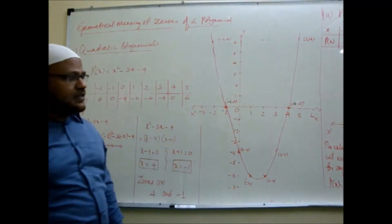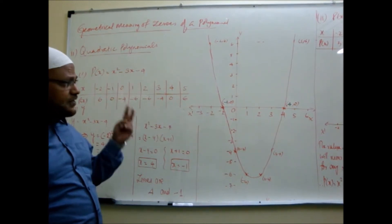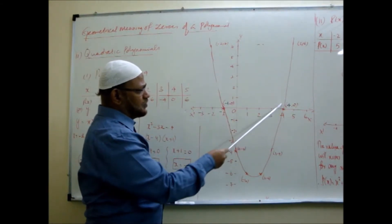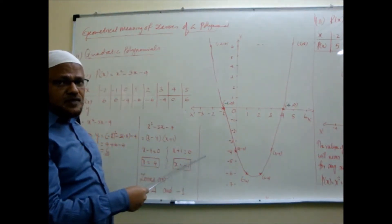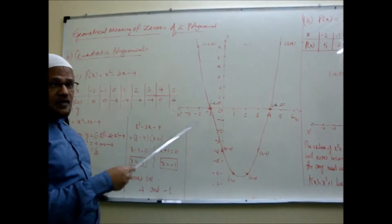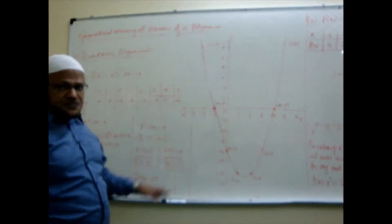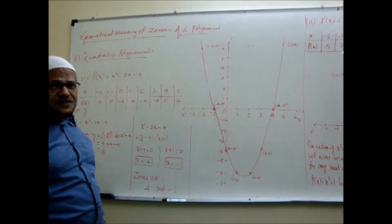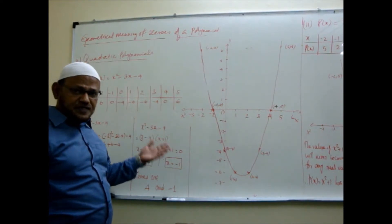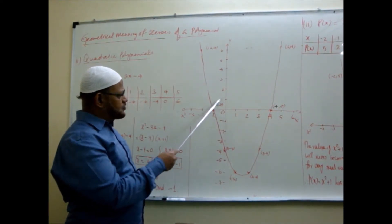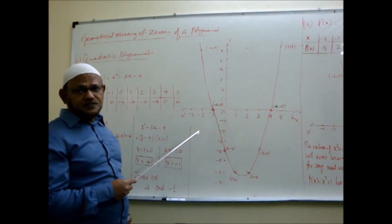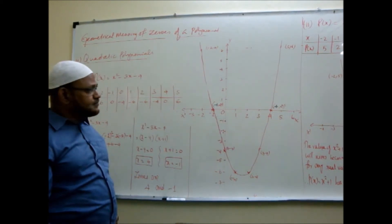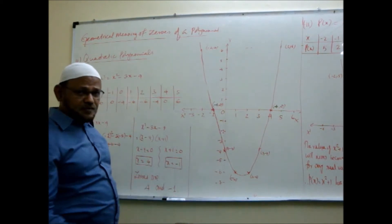We have taken these eight points, plotted them all, and joined them with a smooth freehand curve — not with a ruler. The parabolic curve intersects the x-axis at two points: first at (-1, 0) and then at (4, 0). The polynomial therefore has two zeros. What are the zeros? The x-coordinates of these two points — minus one and four — are the zeros of the polynomial.